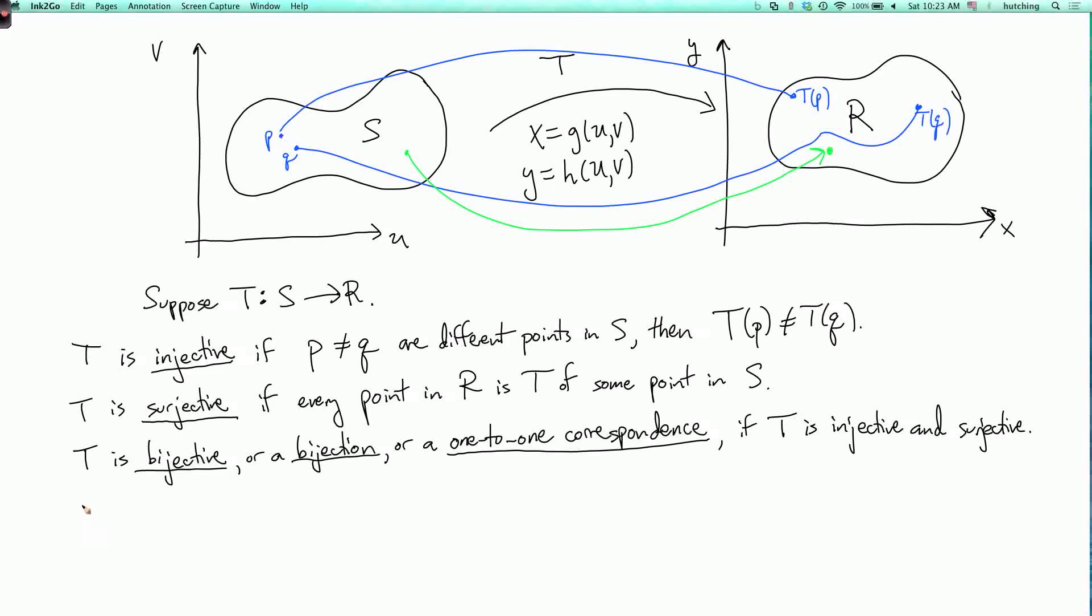Now we also define the composition. So if I have some function F from this region R to the real line. So F is going to go from R to the real line. This is different R. So this R is the region R. And this blackboard bold R is the real line.